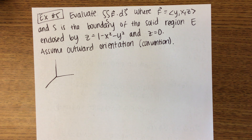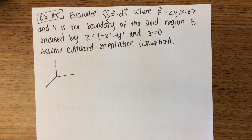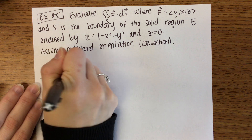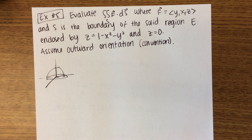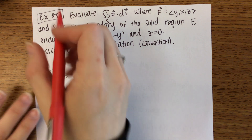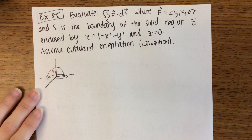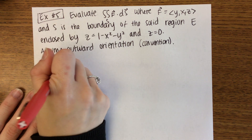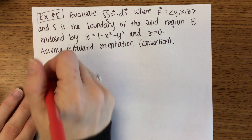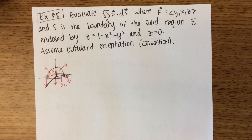z = 1 − x² − y² is a downward parabola — it starts at z = 1. There are actually two surfaces here: the first surface is this paraboloid, and the second surface is the disk at z = 0. With outward orientation, we're going to have to set up two separate integrals, one for each surface.